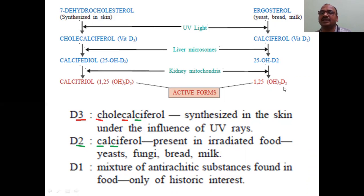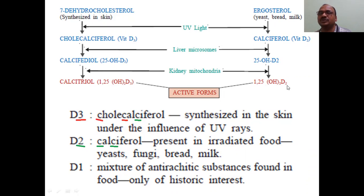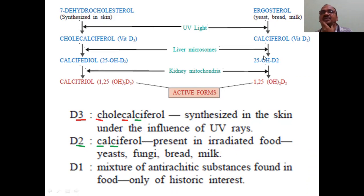D2: 1,25-OH — that is hydroxyl groups at position 1 and 25 — D2 is also an active form. Active forms come from the inactive forms. This line shows the synthesis of D3, this line is the synthesis of D2.